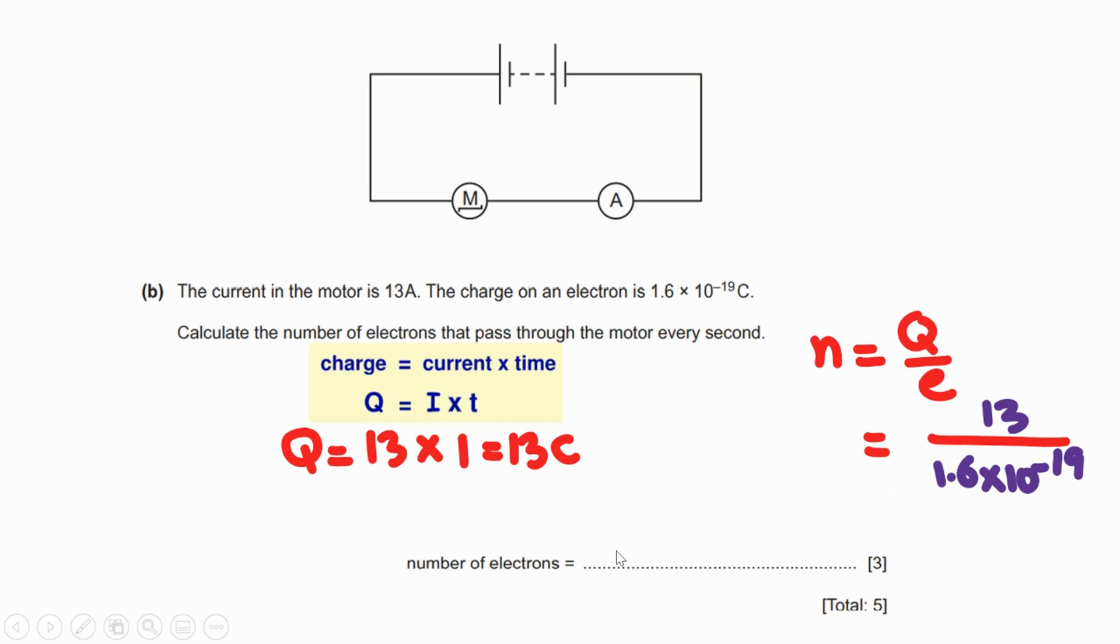Finally, the number of electrons is going to be 8.1 × 10^19. Three marks: one for the formula, the correct substitution showing the examiner how I get n, and finally the correct answer.